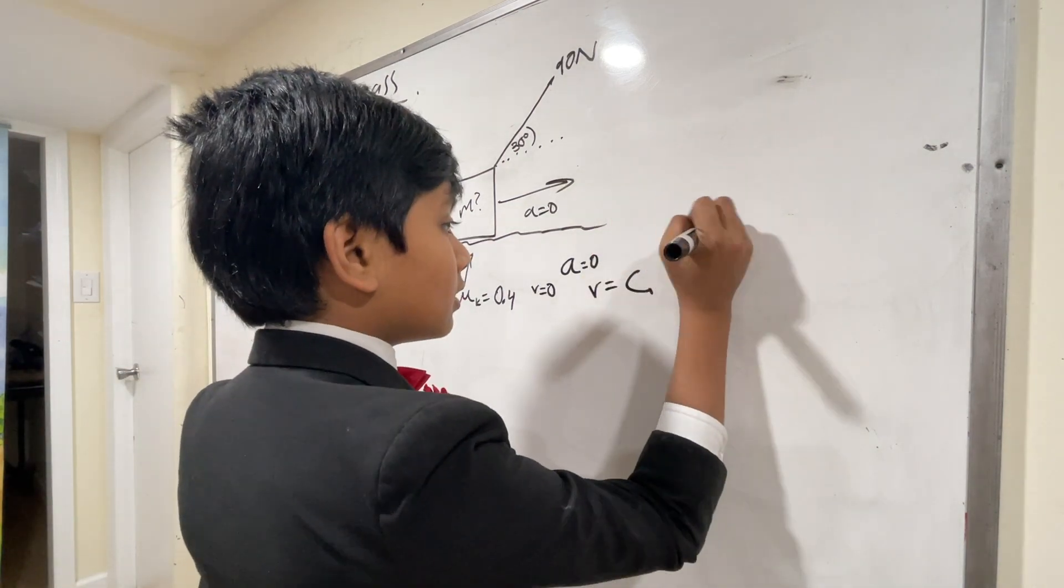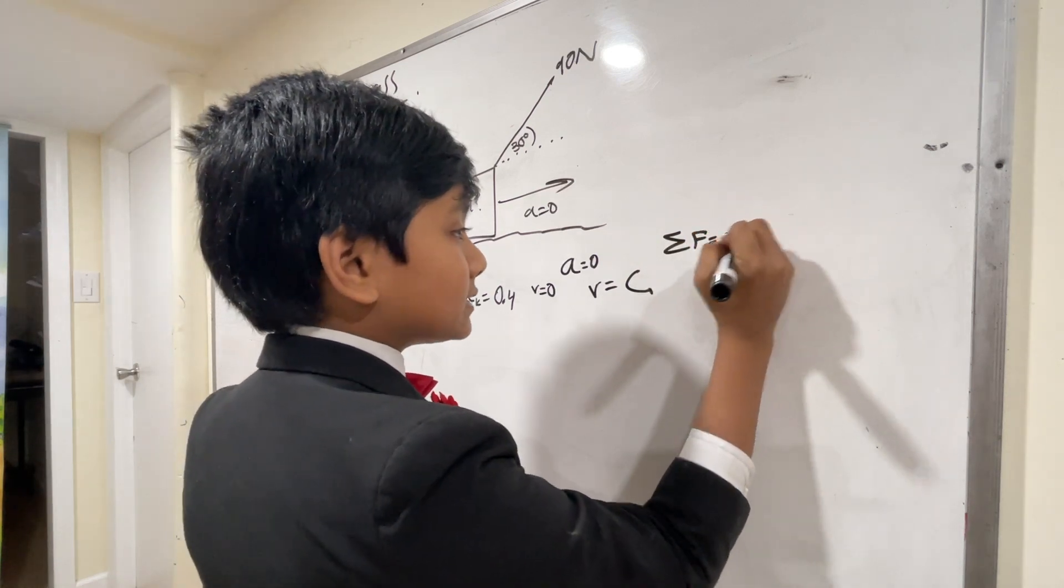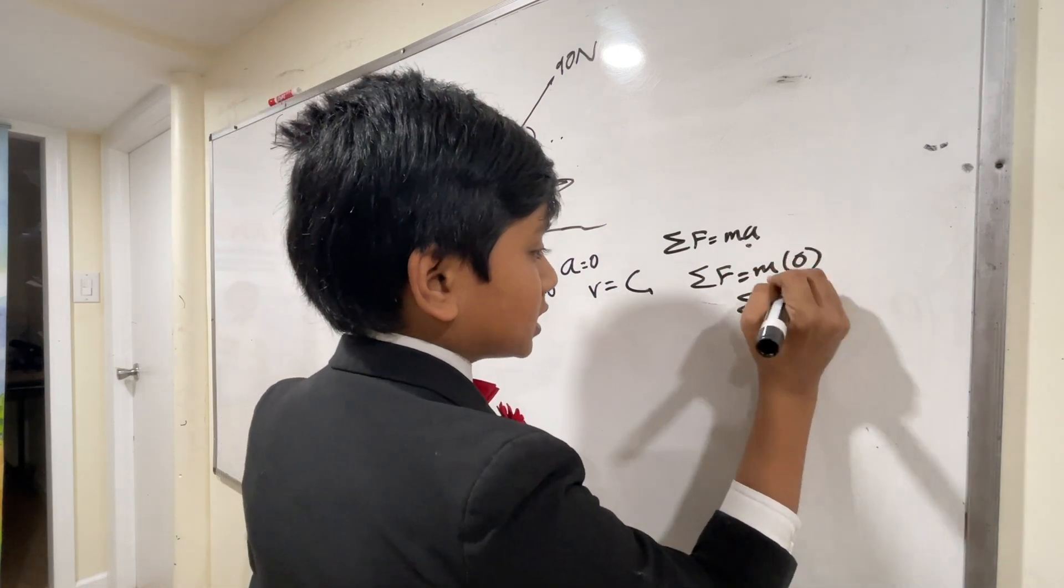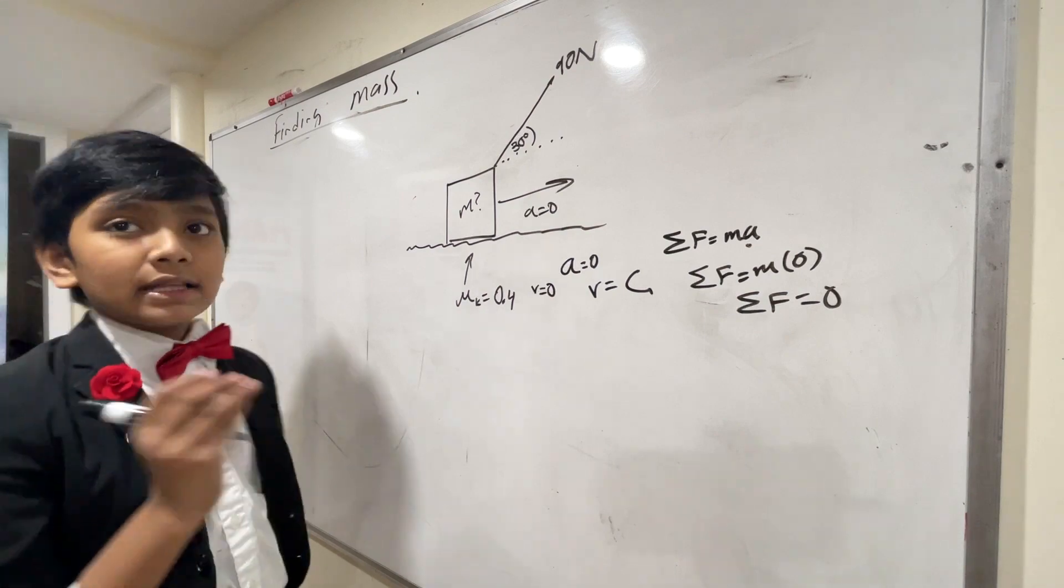Net force is ma, and when acceleration is 0, this becomes m times 0, or just 0. All right. Enough of all those basic questions. Let's begin.